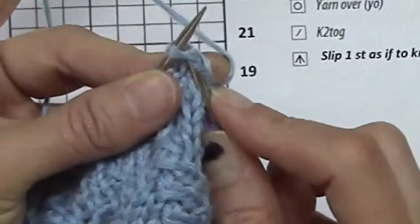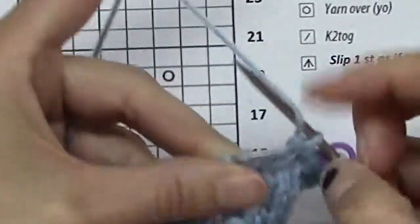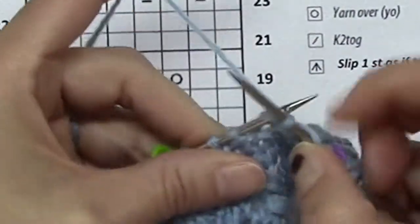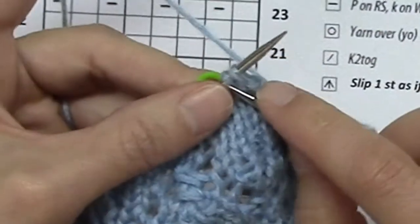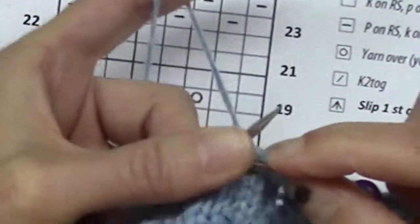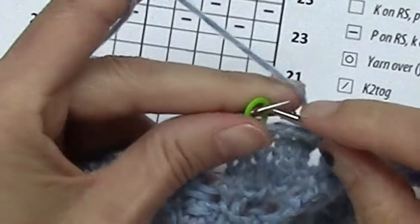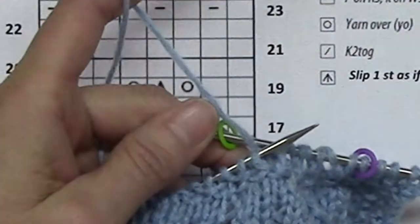So two together, yarn over, two together, yarn over, two together, yarn over... oopsie... two together, yarn over. Move the marker and repeat. I will pick this up when I'm starting row 26.